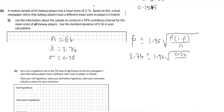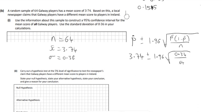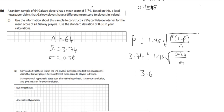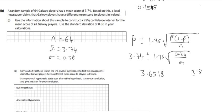We get 0.36 over root 64, which simplifies to 0.36 over 8 = 0.045. Remember there are two values — a plus and a minus — giving the confidence interval as (3.6518, 3.8284). That's the confidence interval.